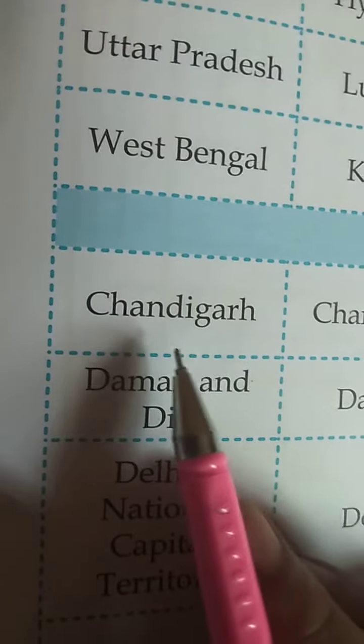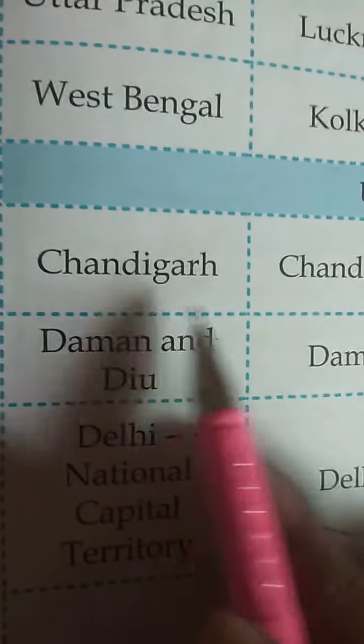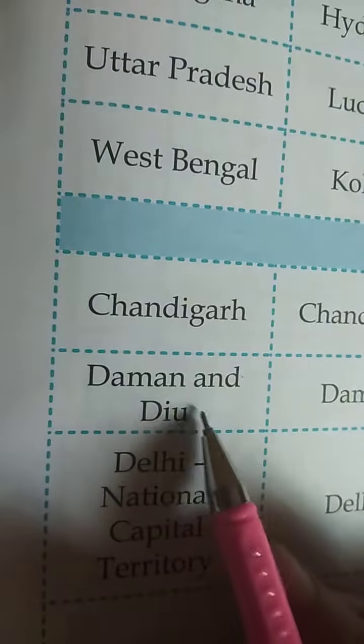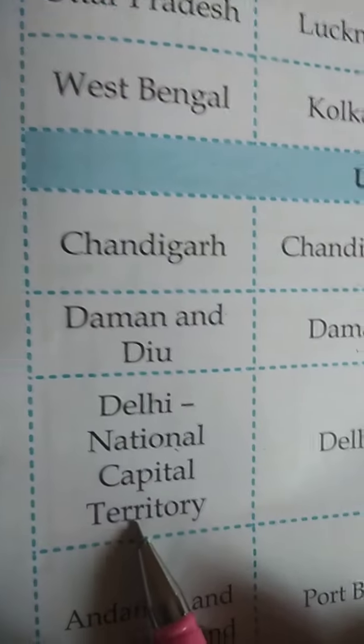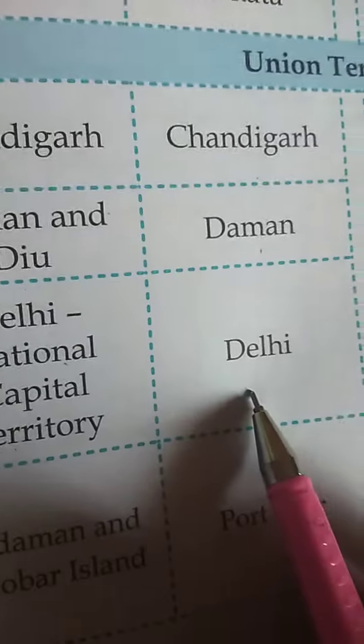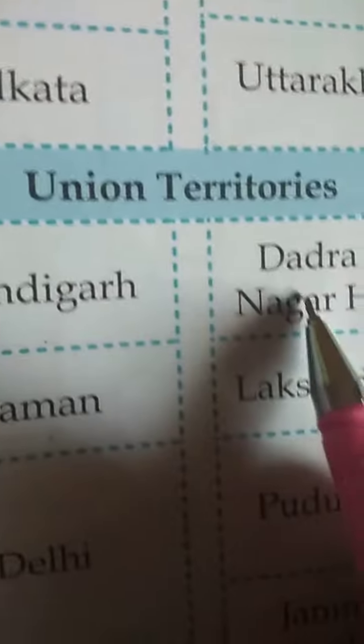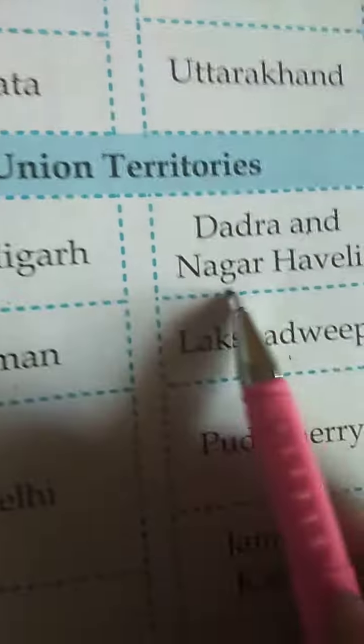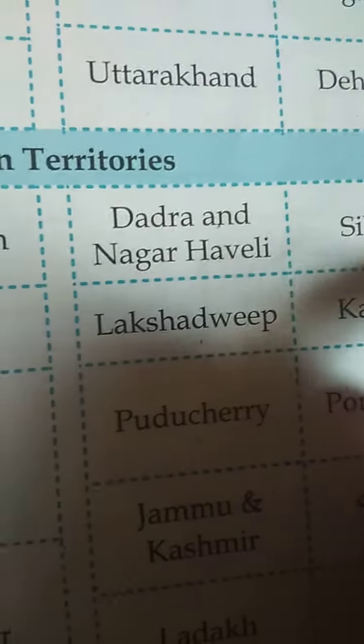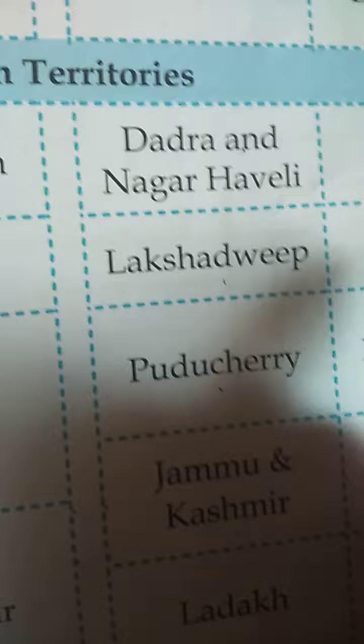So, Chandigarh — its capital is Chandigarh. Daman and Diu — Daman is the capital. Delhi — National Capital Territory is Delhi. Andaman and Nicobar Islands — Port Blair. Dadra and Nagar Haveli — Silvasa.